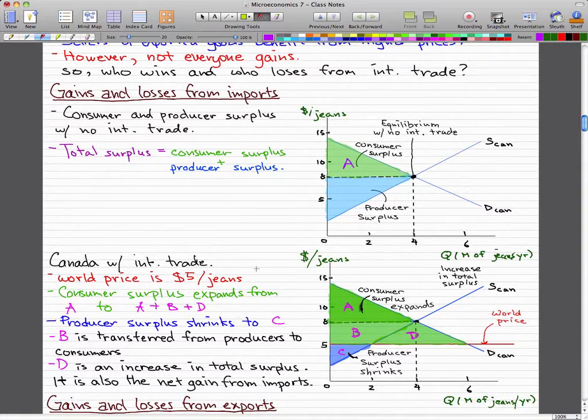And the producer surplus actually shrinks. So before the producer surplus was this blue area that I have here. It actually shrinks down to this small little blue area that I have here when we include the world price.